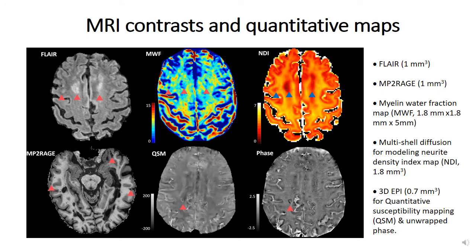In this study, we enrolled 91 multiple sclerosis subjects including 62 relapsing-remitting and 29 progressive multiple sclerosis subjects and 72 healthy controls. All subjects underwent MRI scanning at 7 Tesla. We used FLAIR for detection and segmentation of white matter lesions, MP2RAGE for detection and segmentation of intracortical and leukocortical lesions, and myelin water fraction maps were computed to quantify myelin water fraction as a measurement for myelin and multi-shell diffusion to quantify neurite density index as a measurement for axon. 3D EPI, unwrapped phase, and QSM were used to detect chronic active lesions with paramagnetic rims, hereinafter called rim-positive lesions.